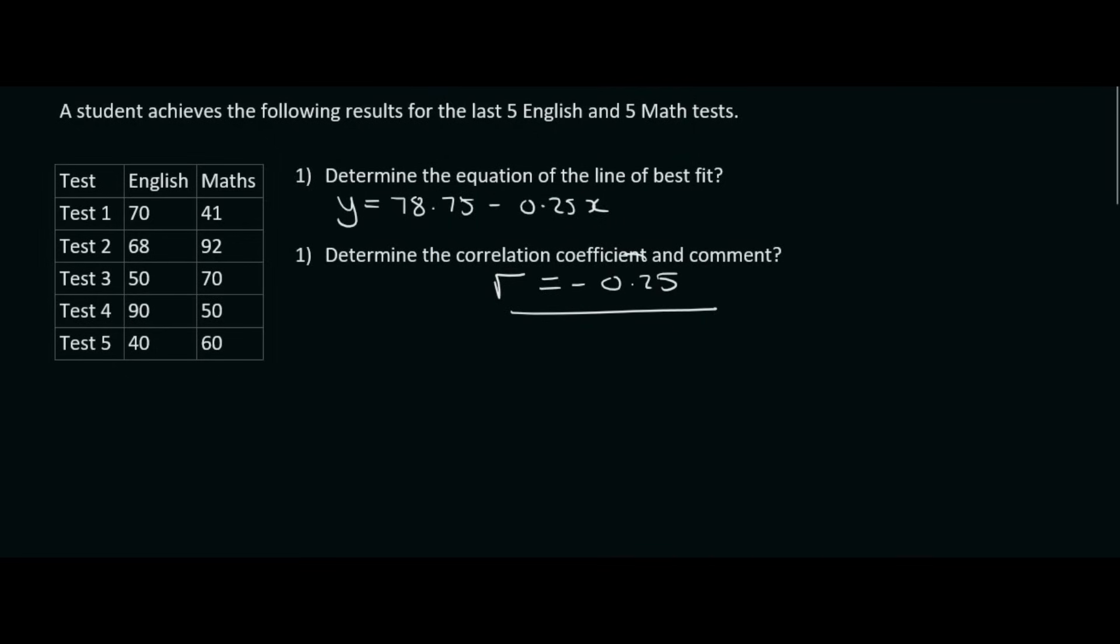And we get negative 0.25. It's just a coincidence that these two numbers are the same. That won't always be the case. They were slightly different on the calculator, but when we rounded up, it gave us the same.